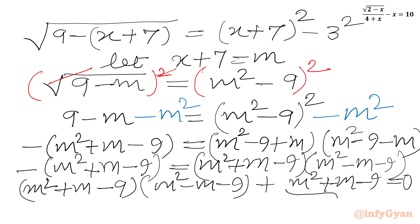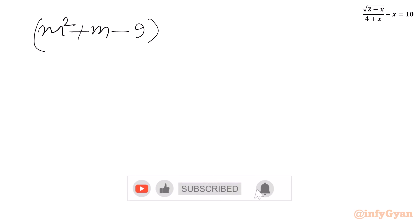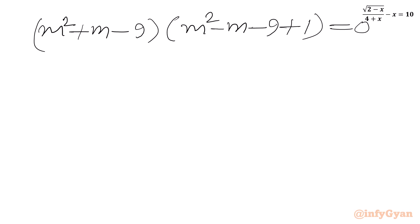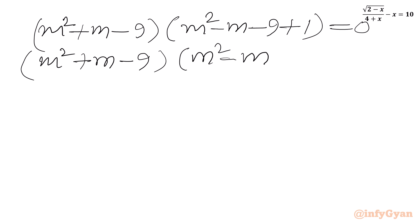Moving all terms to the RHS, we write (m squared plus m minus 9)(m squared minus m minus 9) plus (m squared plus m minus 9) equals 0. Taking (m squared plus m minus 9) as a common factor, we get (m squared plus m minus 9) times (m squared minus m minus 9 plus 1) equals 0, or (m squared plus m minus 9)(m squared minus m minus 8) equals 0.